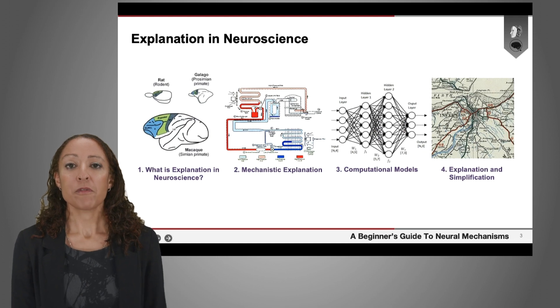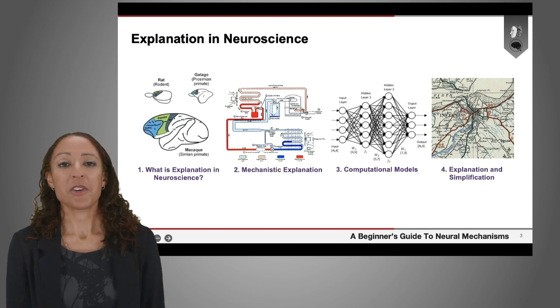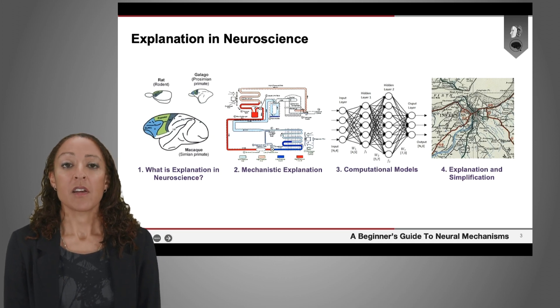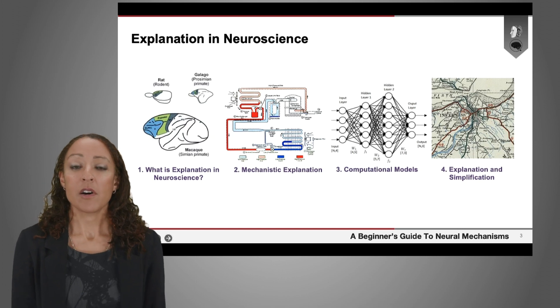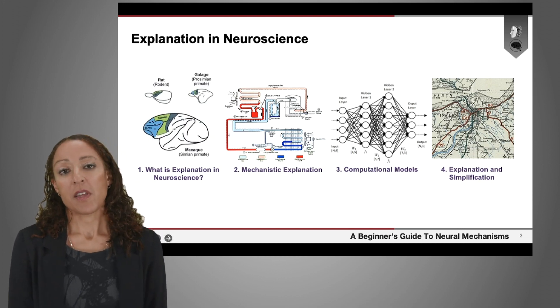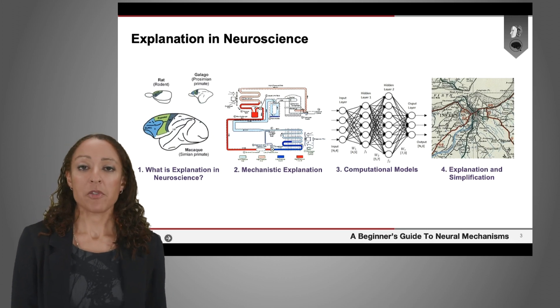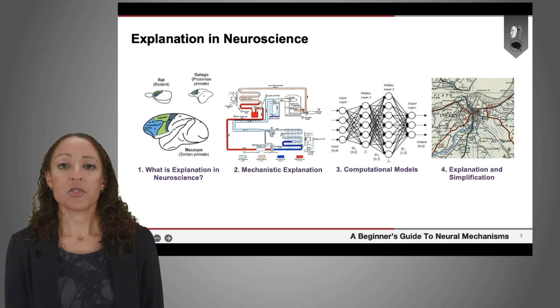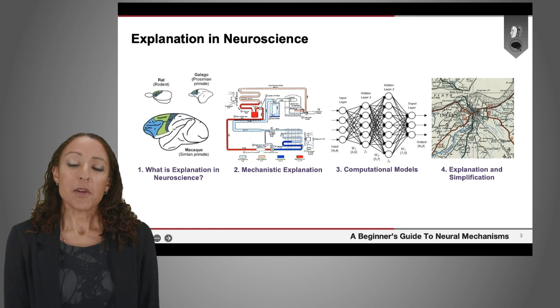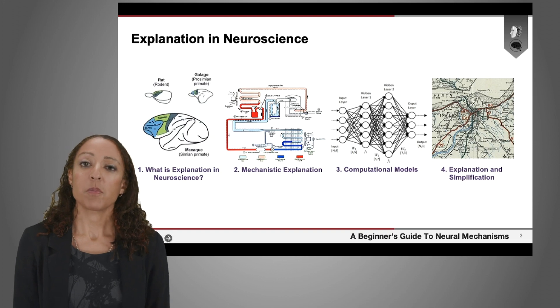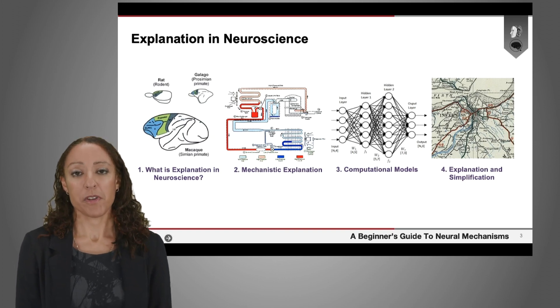So there are lots of topics that we could cover in a lecture like this, but this is what we'll be looking at today. The question of what explanations in neuroscience are. Then I'm going to be focusing in the second part on mechanistic explanation, giving you some background, both contemporary and historical, on that. Then I'm going to be focusing on computational models in neuroscience. And then finally talking about the connection between explanation and simplification.